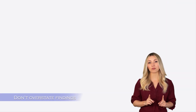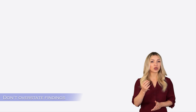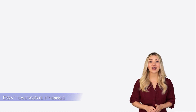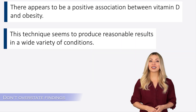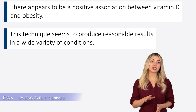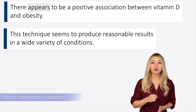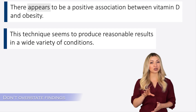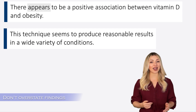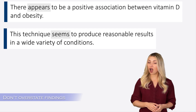Another important thing to remember is not to overstate your findings. If you found something really interesting but are not 100% sure, you must not mislead your readers. The best way to do this will be to use words like it appears and it seems. This will tell the readers that there is a slight possibility that you might be wrong. Look at these examples. The authors are saying that there appears to be a positive association between vitamin D and obesity. The word appear is used to tell the readers that they are not 100% sure. In the second example, the authors are saying that the technique seems to produce reasonable results in a wide variety of conditions. They have used the word seems to warn the readers that there is a slight chance that this may not be true.